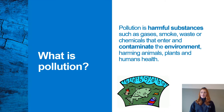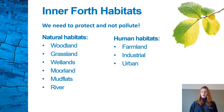There are three main forms of pollution. It can happen in the air, in the water, or on the land. Today, we'll be concentrating on pollution which ends up in the water. The Inner Forth is home to many different types of habitats, such as woodlands, grasslands, wetlands, moorlands, mudflats and rivers. They're all really important for wildlife, as this is where they access their food, water and shelter — it's their homes. We need to protect them and not pollute them.